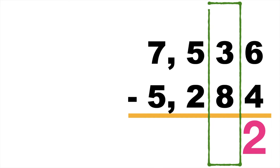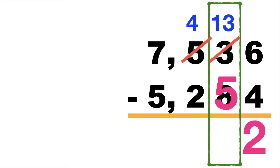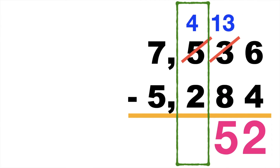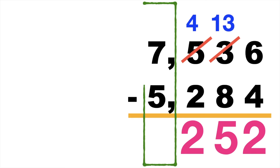3 minus 8 — since 3 is smaller than 8, we're going to borrow 1 from 5. 5 will become 4, then 3 will become 13. 13 minus 8 is equal to 5. Then 4 minus 2 is equal to 2. Then 7 minus 5 is equal to 2.